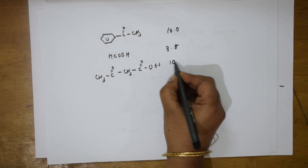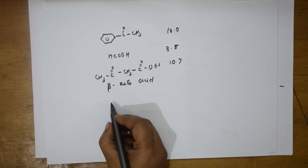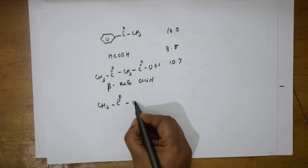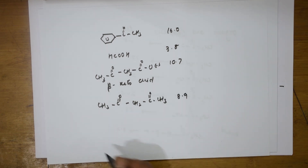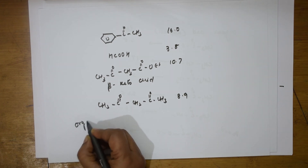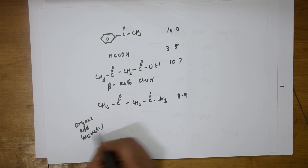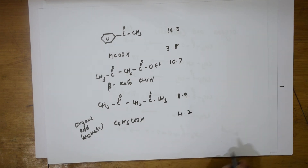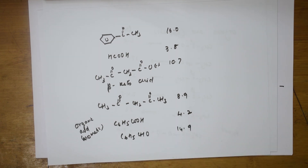For beta keto ester, the pKa is 10.7. One more example: aromatic organic acid, C6H5COOH, has a pKa of 4.2. Then benzaldehyde, C6H5CHO, has a pKa of about 3.9. I've given you these values for reference — note them down and remember for the exam.